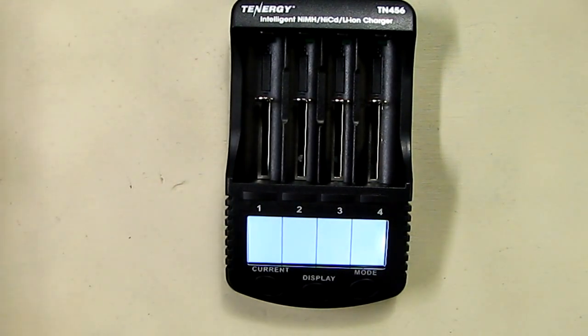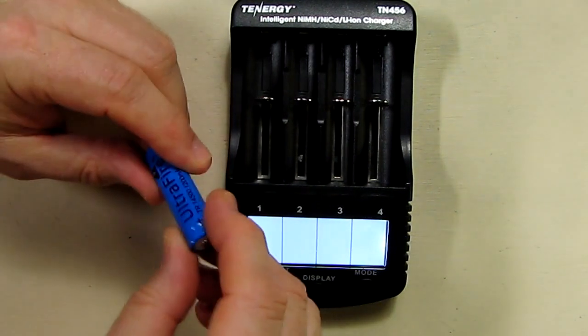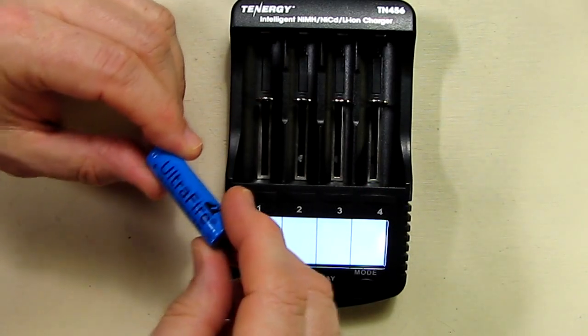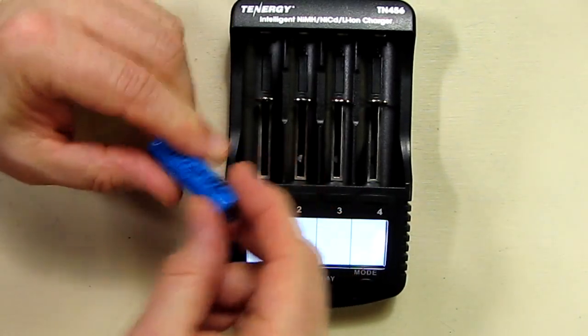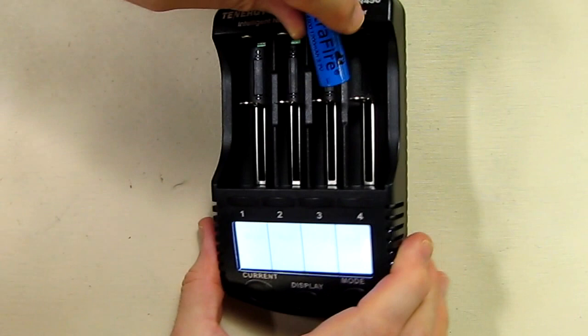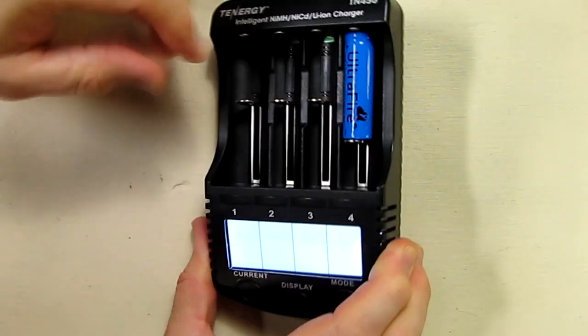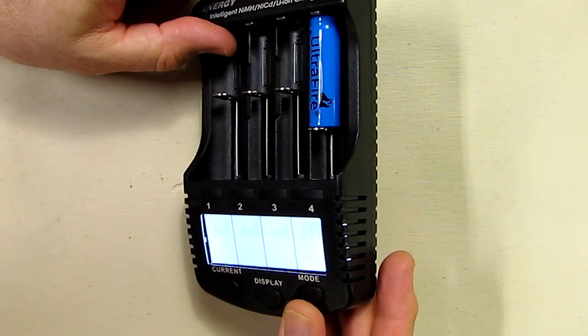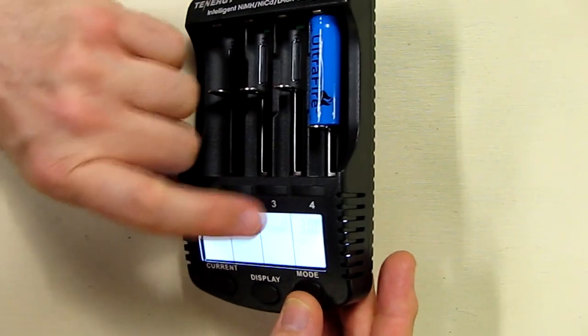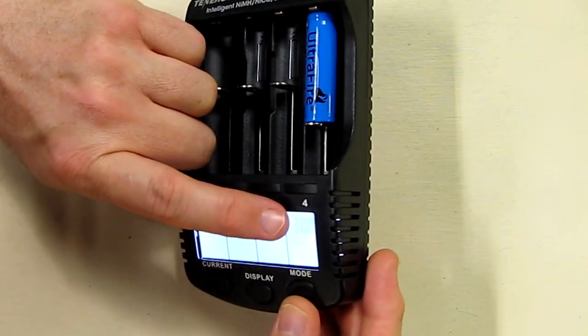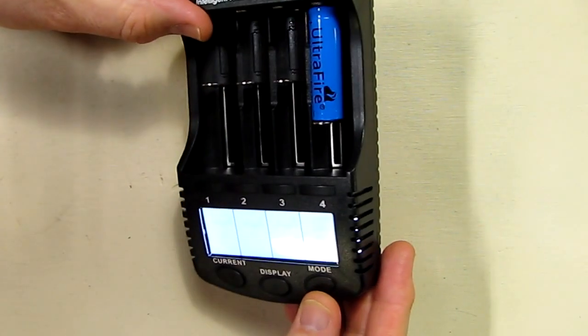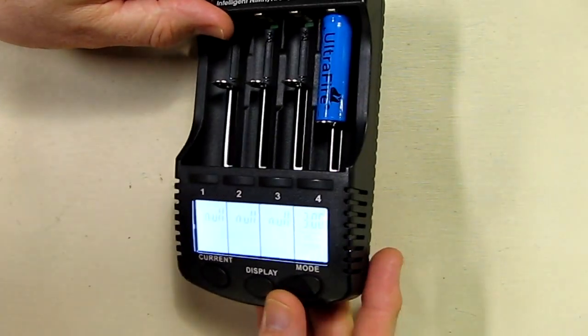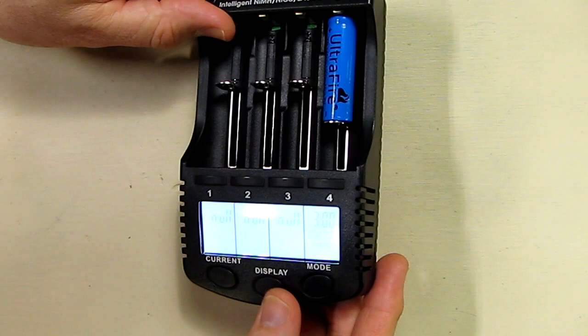Let's try another chemistry here or another battery. Let's try a smaller size difference. This is a 14500. Let's try it on this port right here. Place the battery in there and it goes to 3.99 volts and it's defaulting again to the 300 milliamps charge.